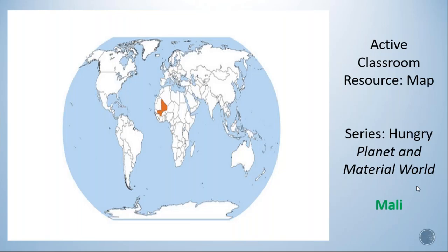This comes from Hungry Planet and Material World. If we pretend we're in a geography class and we're going to study Mali — what the people are like, what they eat, what their day-to-day life is like — most students and specifically English language learners may not have a concept of where Mali is. So anytime you can start with a map to give them some context of the place, that's a great strategy.